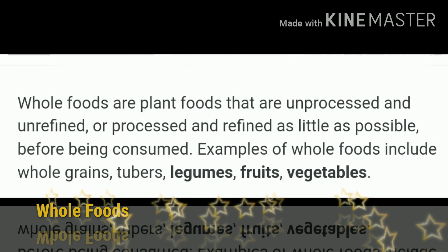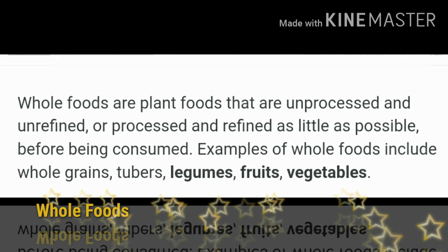Food types. Whole foods are plant foods that are unprocessed and unrefined, or processed and refined as little as possible before being consumed. Examples of whole foods include whole grains, sugars, legumes, fruits, and vegetables.